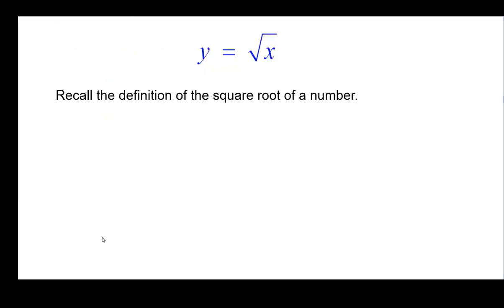Let's start with the definition of the square root of a number. Remember, for example, the square root of 36 is 6 because when you square 6, you get 36.